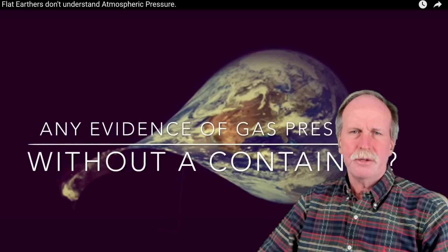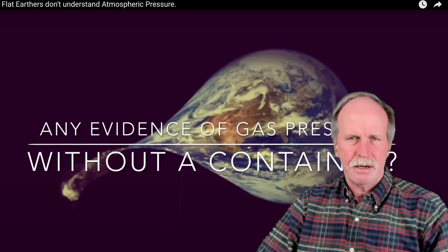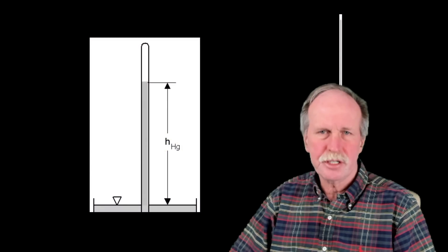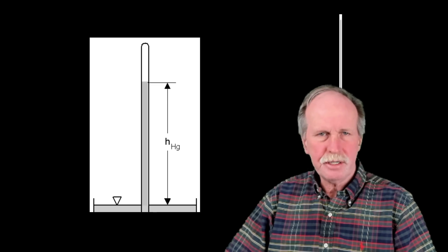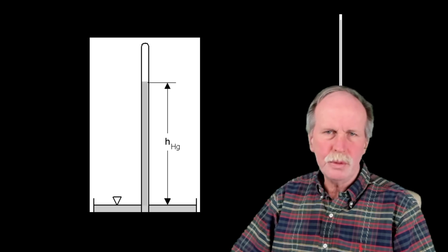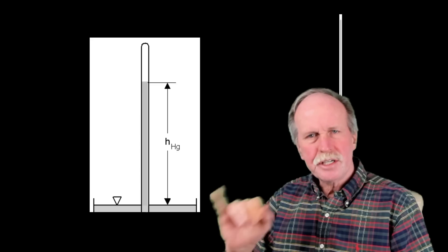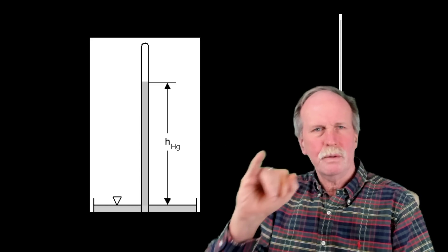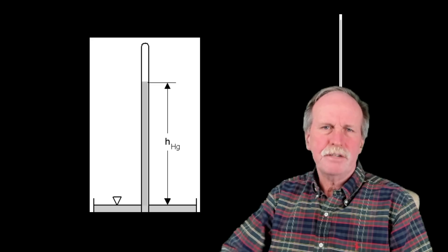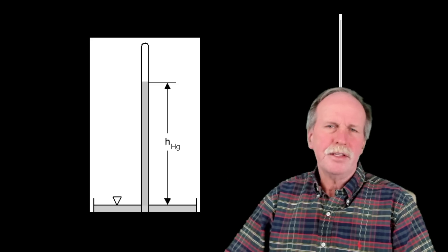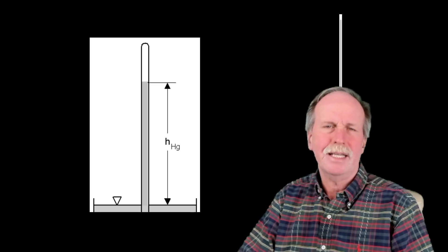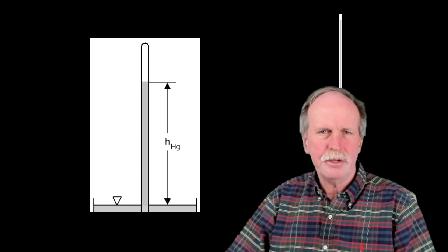We developed an instrument a couple of hundred years ago that takes advantage of this principle to tell us something about our environment. This is a schematic of a device that we used to make in school before they decided it was hazardous to expose school children to mercury. You take a rigid glass tube that is sealed on one end and you fill it with mercury. Then you put the open end of the tube under a pool of mercury and lift the tube up vertically. The force of gravity pulling the mercury down will create a vacuum at the top of the tube, and the pressure of the atmosphere on the pool of mercury acts to force that mercury up the tube into the vacuum. However, there's a balance point between the force of the atmosphere pushing the mercury up the tube and the force of gravity pulling it down, and you get a column of mercury with a small vacuum above it.